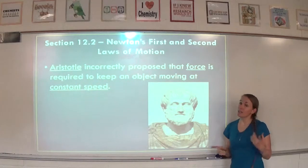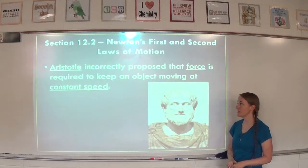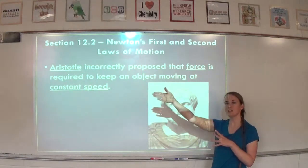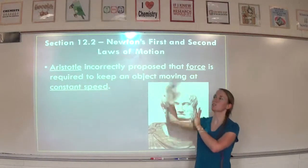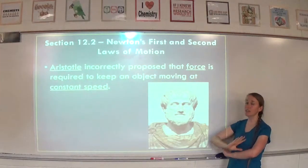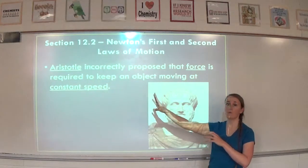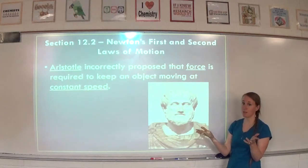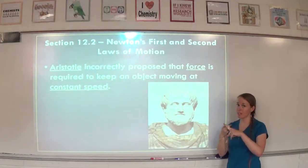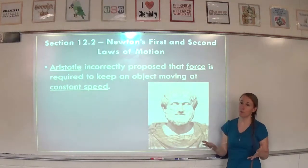Aristotle incorrectly proposed that force is required to keep an object moving at a constant speed. He decided that when you throw a ball, the reason it eventually falls and stops is because you weren't still throwing it. That's actually incorrect. Technically, if nothing else is acting on that ball when you throw it, it should just go on forever — that's what would happen in outer space. What makes the ball stop? Air resistance and gravity — that's what makes the ball stop.